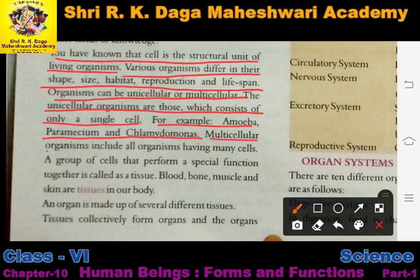If we talk about multicellular organisms, as the name suggests, these are organisms made up of many cells. All organisms which have many cells are called multicellular organisms.